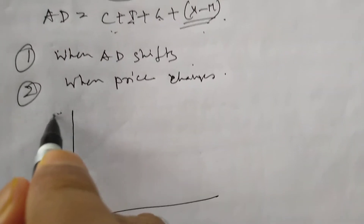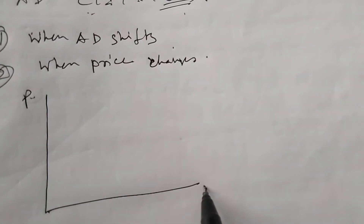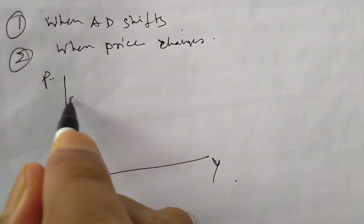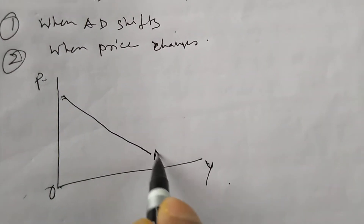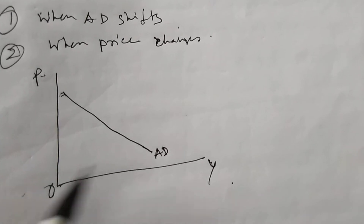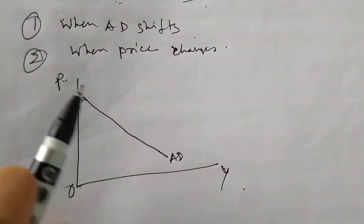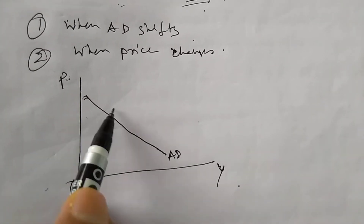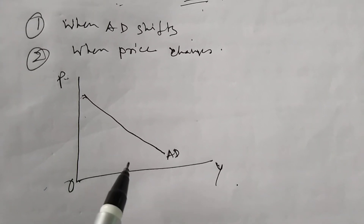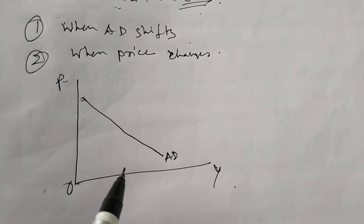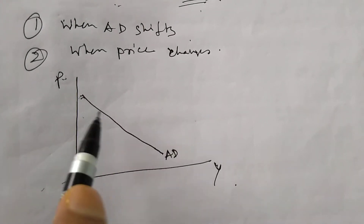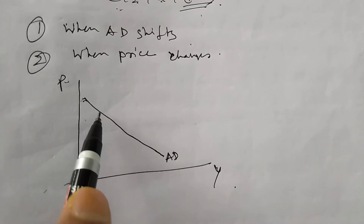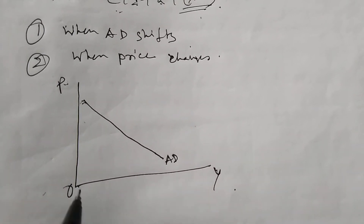Suppose we have price on one axis and income on the other axis. This is our initial AD curve, which explains the different combinations of price and income that clear both the product market and the money market. This curve is downward sloping — so if price is more, aggregate output will be less.